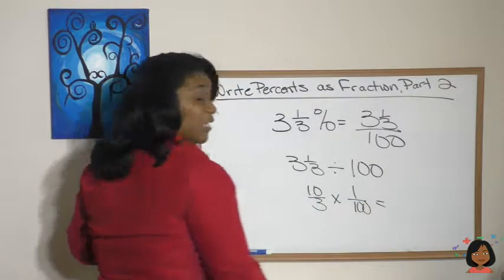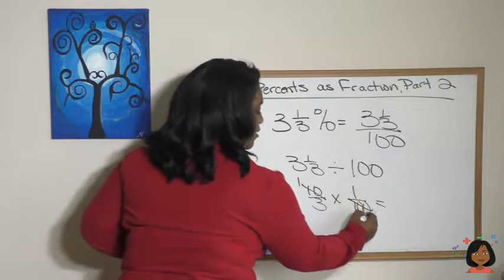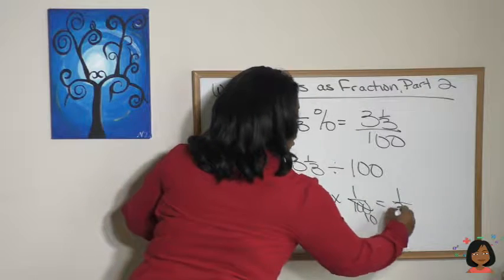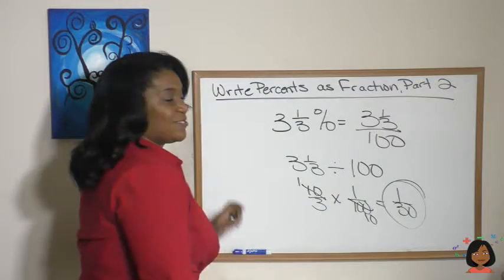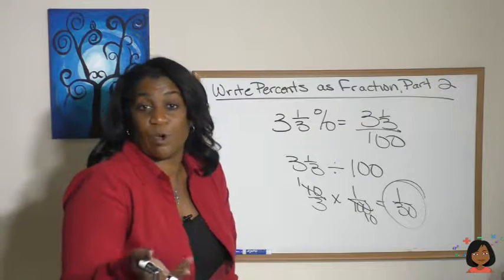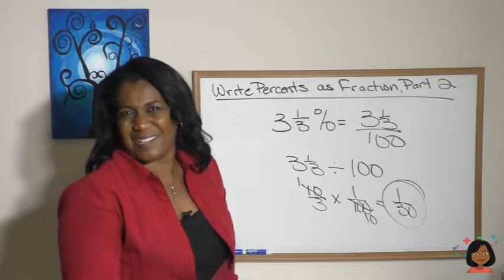And now we can reduce 10 and 100. This goes to a 1, this goes to a 10. Let's multiply across. We get 1 over 30. That's our answer. Okay, so you see the process is the same. You still are putting it over 100, you just need to know what to do after you put it over 100.